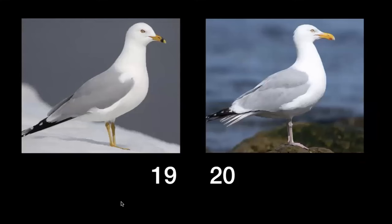Numbers nineteen and twenty, the last ones — Herring Gull or Ring-billed Gull. Which one has the ring around the bill? That's the Ring-billed Gull. Which one has the red blotch underneath the bill where the babies peck to get the parent to regurgitate food? That's the Herring Gull. And don't ever call them seagulls — you're a professional now.